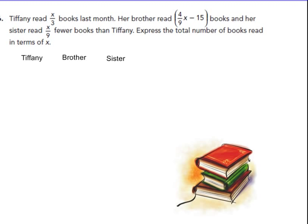Pause me if I'm going too quickly or writing too quickly — think about it for a bit and make sure you're agreeing with what I'm doing. So Tiffany read X over 3 books last month. Her brother read 4 ninths X minus 15 books. And her sister read X over 9 fewer books than Tiffany — so the sister is being compared to Tiffany, not the brother. Express the total number of books read in terms of X — so we're going to add these expressions together and simplify.